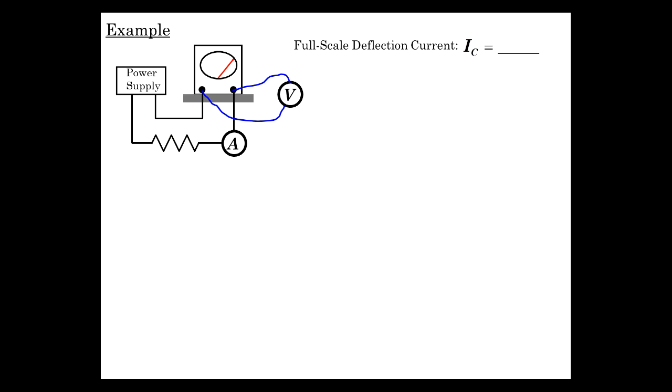So we're going to drive current through this movement and figure out what the full scale deflection current is. And when we do that, we get 5 milliamps. That's my meter example. 5 milliamps will drive that coil to swing all the way full scale reading.